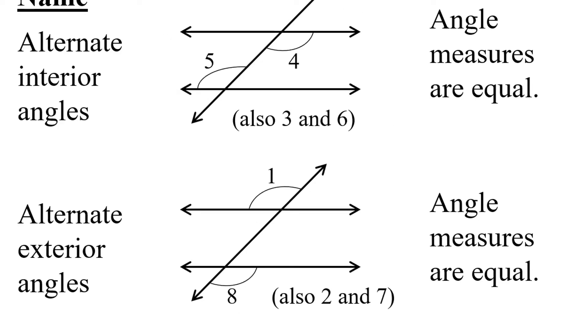Angles like number 1 and number 8 which are on alternate sides of the transversal and outside of the two parallel lines, in other words on their exterior, are called alternate exterior angles and these are also equal.